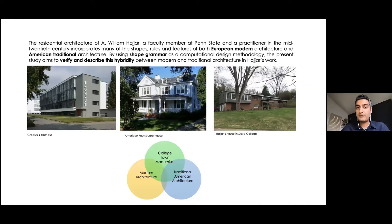This became my idea for my PhD study: the residential architecture of Hajar is a mixture of traditional American architecture and modern European architecture. Basically, his architecture incorporates many of the shapes, rules, and features of both European modern architecture and traditional American architecture. I used shape grammar as a computational design methodology to verify and describe this hybridity between modern and traditional architecture in Hajar's work.